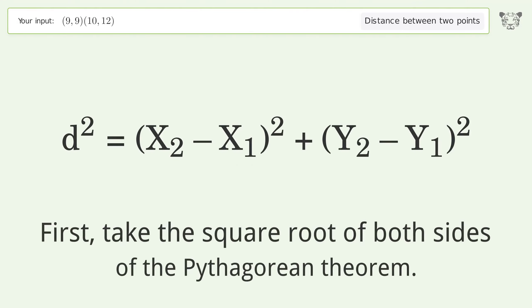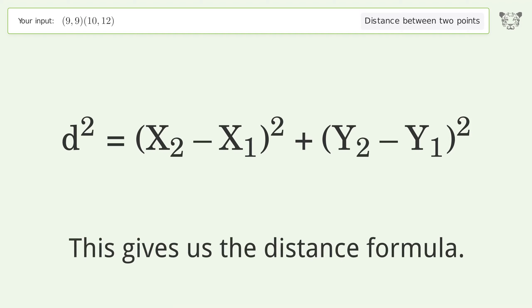First, take the square root of both sides of the Pythagorean theorem. This gives us the distance formula.